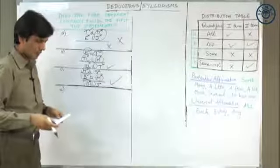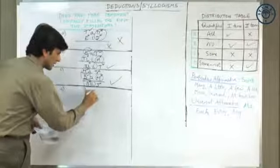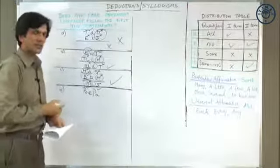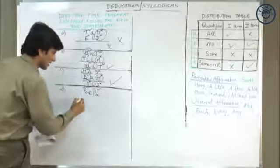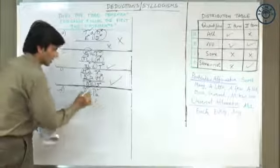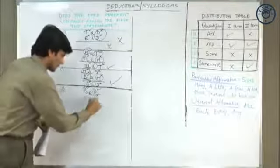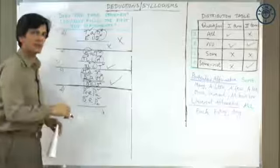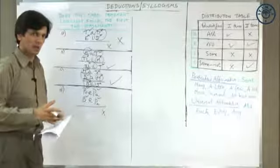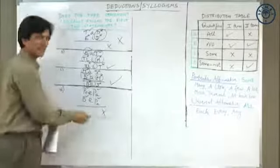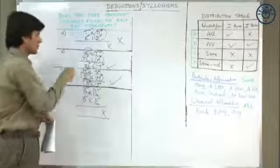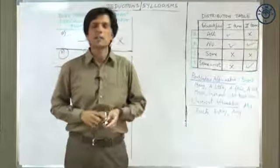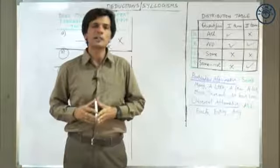Part D: no politician is a patriot — universal negative, both distributed. Balu is not a patriot should be understood as no Balu is a patriot — also universal negative. Since both premises are negative, no conclusion can be drawn whatsoever. The question's conclusion is automatically invalid. Part D is ruled out. So parts B and C are definitely valid, and the best pick from the given choices is option C. This brings us to the end of the session on deductions or syllogisms. Come back to these sessions if you have any doubts. Good luck, thank you very much.